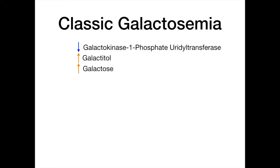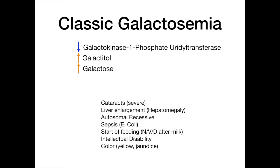In classic galactosemia, there's a deficiency of galactose-1-phosphate uridyl transferase, causing an increase in galactitol and galactose accumulating in much higher volumes with much more severe symptoms. High-yield findings include: severe cataracts, hepatomegaly (liver enlargement), autosomal recessive inheritance, susceptibility to E. coli sepsis in infancy (classically presenting when the infant starts feeding with vomiting, diarrhea, and nausea), intellectual disability, and jaundice (color changes).